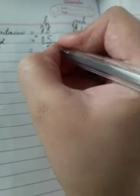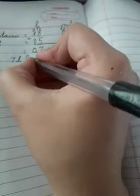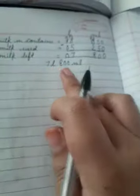We will put the sign of subtraction. Write milk left, this is what we need to find out. We will simply subtract. Zero minus zero is zero. Five minus five is zero. Zero minus two cannot be done, so we borrow from three. This becomes two, here becomes ten. Ten minus two is eight. Two minus five also cannot be done, so we borrow. Here becomes twelve. Twelve minus five is seven. Zero minus zero is zero. So our answer is seven liter eight hundred milliliter milk left in container.